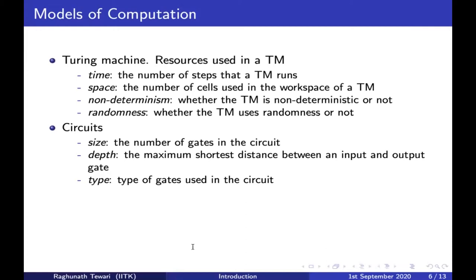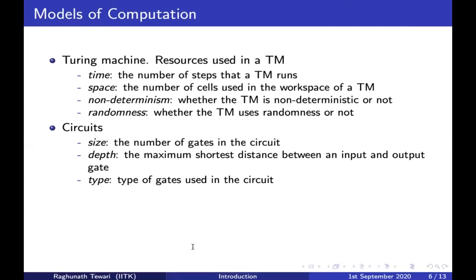The resources of a circuit are the following: the size of the circuit — how many gates are present; the depth of the circuit — the maximum shortest distance between an input and output gate; and the types of gates used, for example whether you allow NOT gates or how AND and OR gates appear, and any restrictions that make logical sense to apply on the circuit.